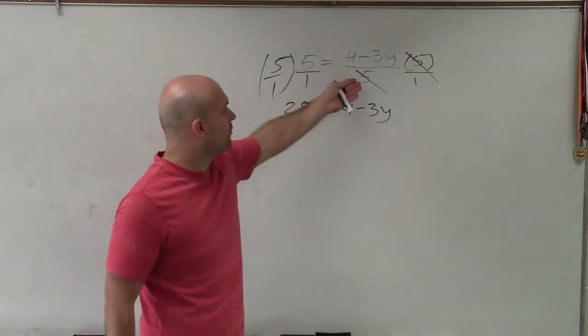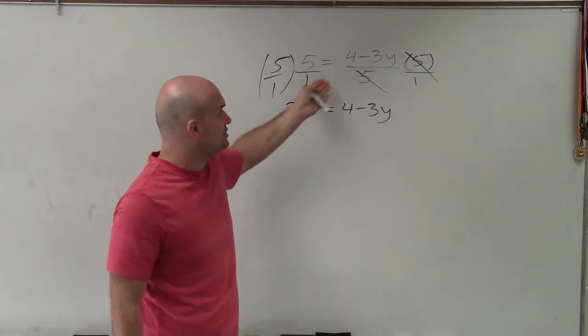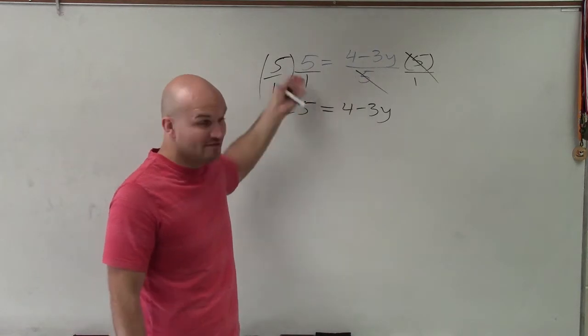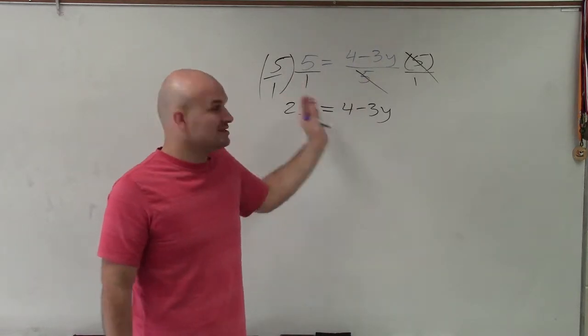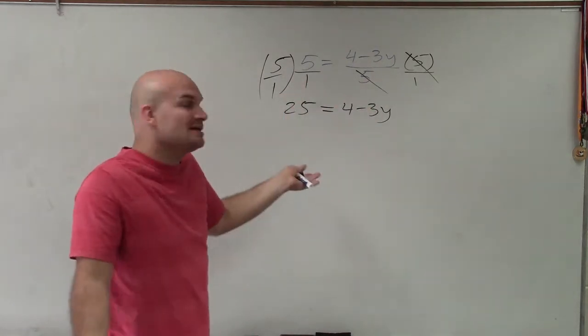But you can see if you have a numerator or denominator, one term in your denominator, or even two, if you can find the LCD, just multiply both sides by it. And it's the same thing as the cross product.